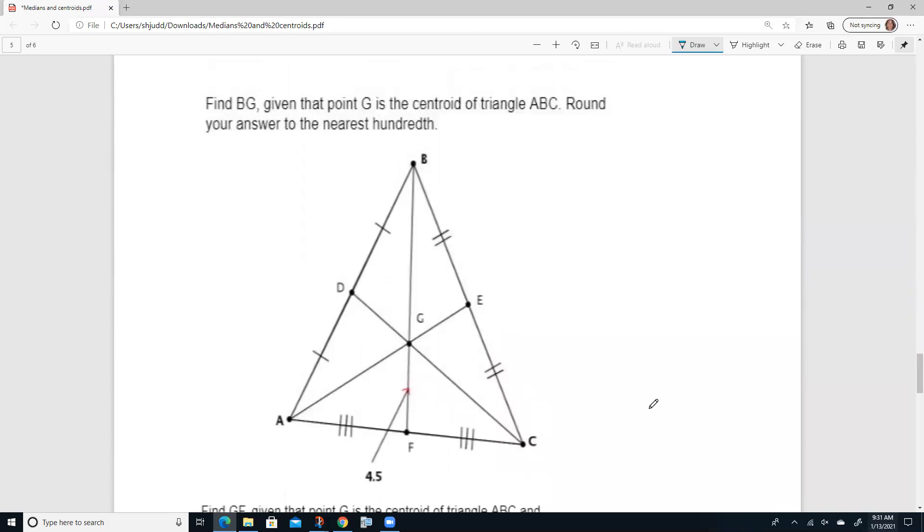Let's look at this one. BG. Given that G is the centroid of ABC, round your answer to the nearest hundredth. Okay, we're trying to find BG. BG is this guy.